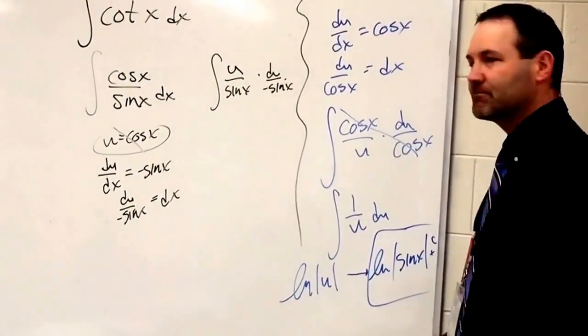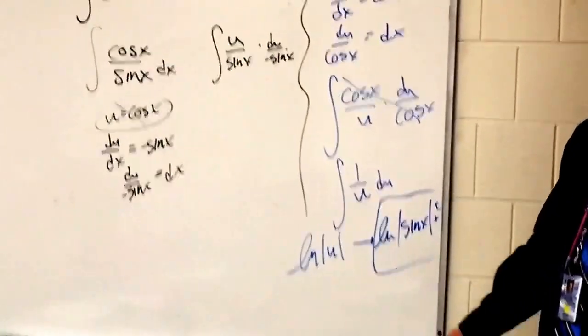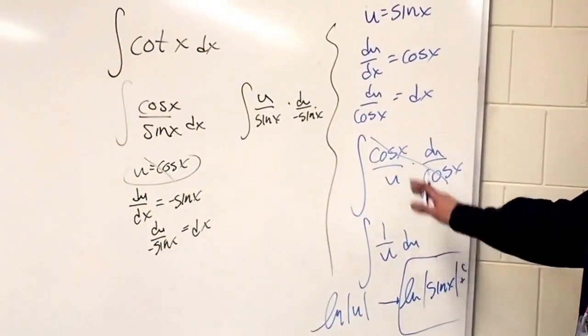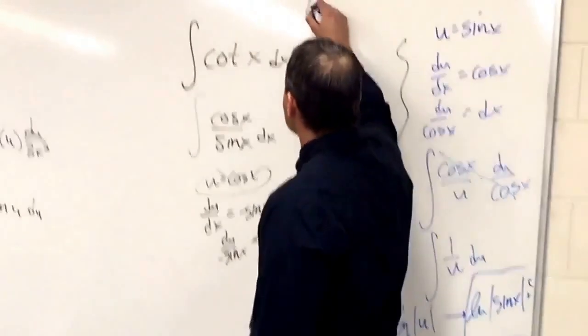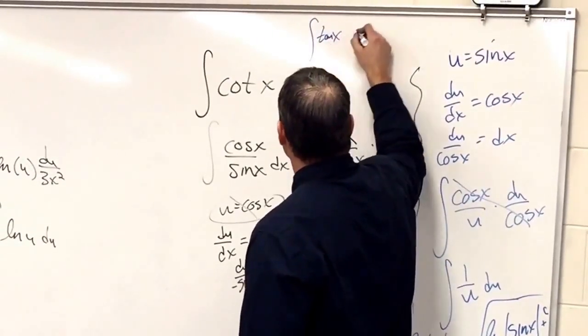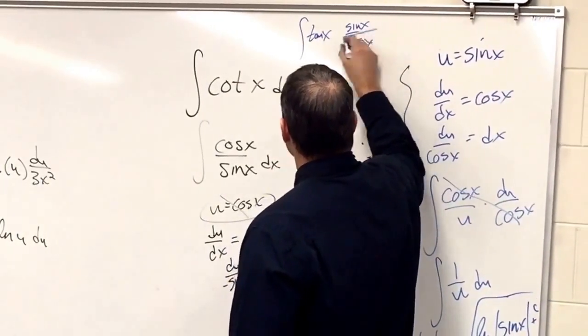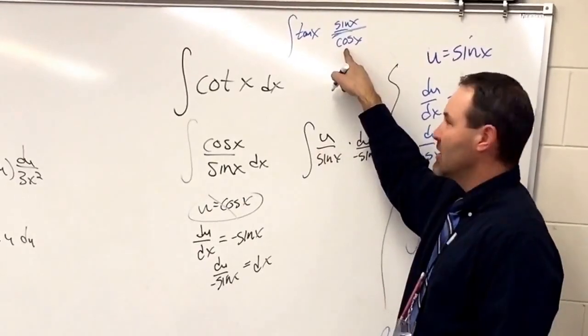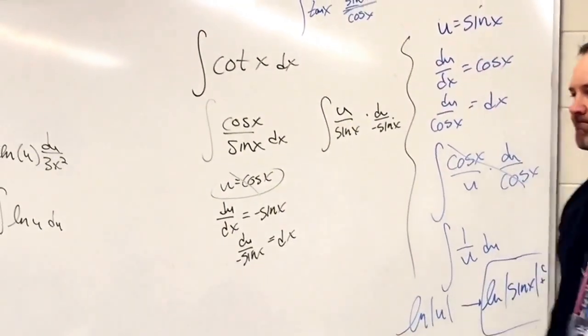Because you can't do the natural log of a negative. So I think in your assignment you will have tangent. Remember tangent is sine over cosine. So choose the bottom one. So in tangent you would choose cosine. For cotangent, choose sine. Choose the bottom one. You'll get the right answer.